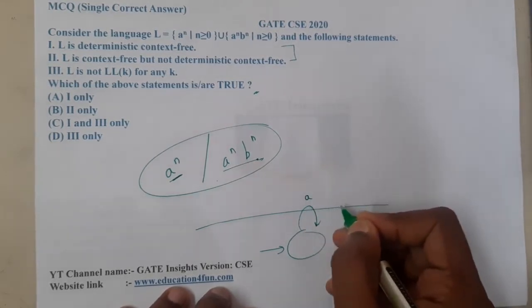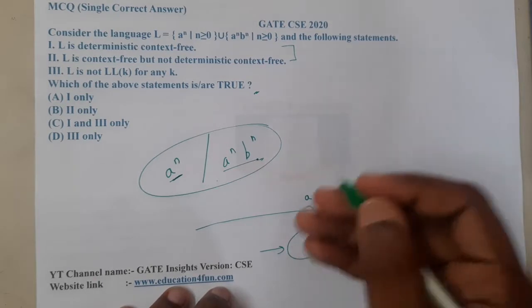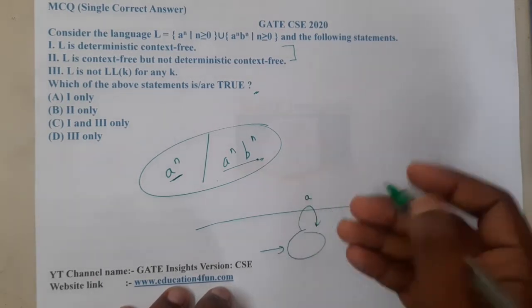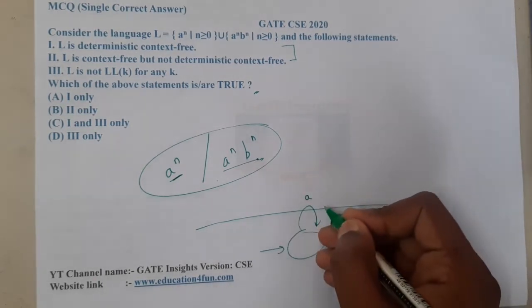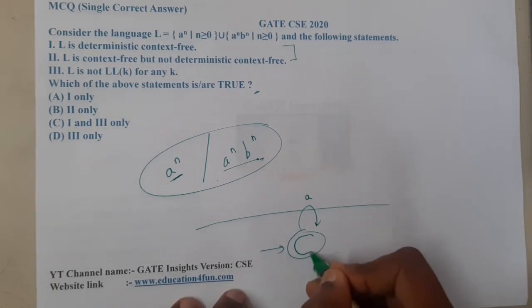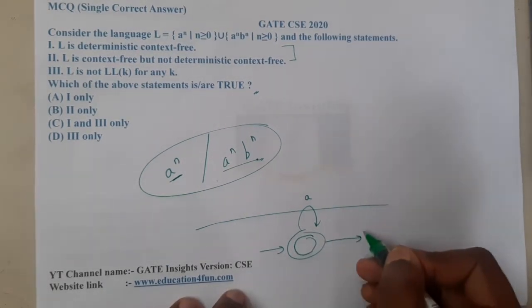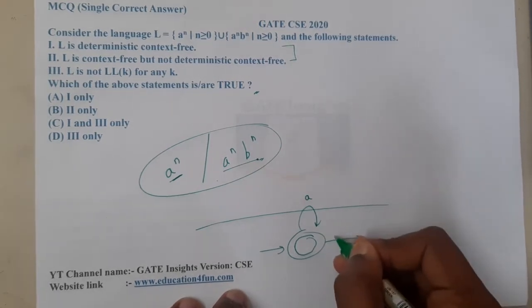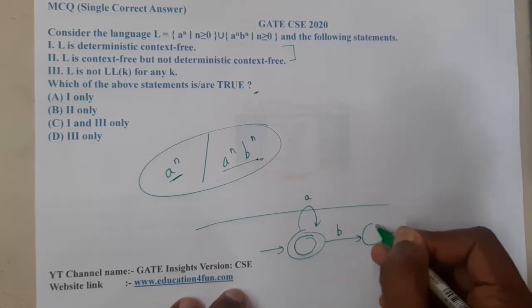What I will do is, as I get a's, I'll start pushing them inside. My stack should be empty or I'll be accepting with final state, so I will make my first state as the final state. When I get b, I will move here.